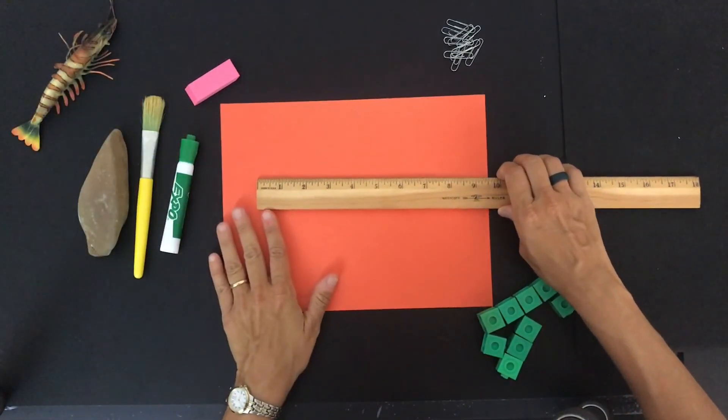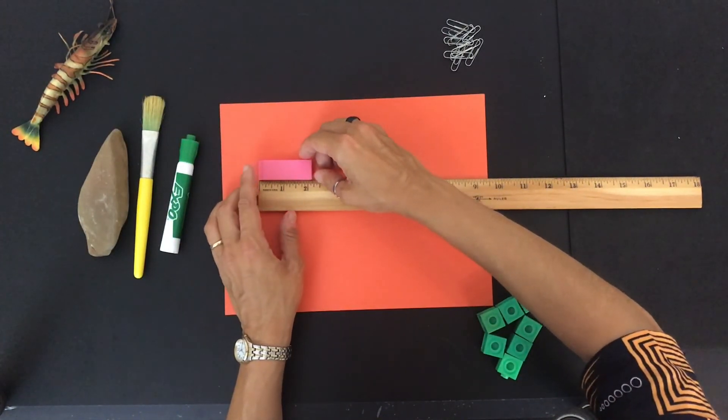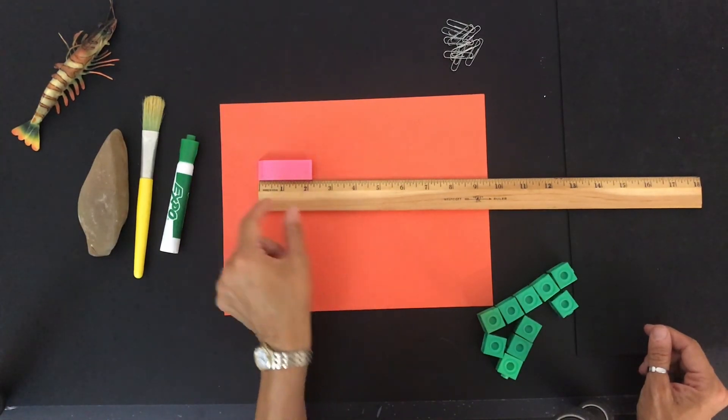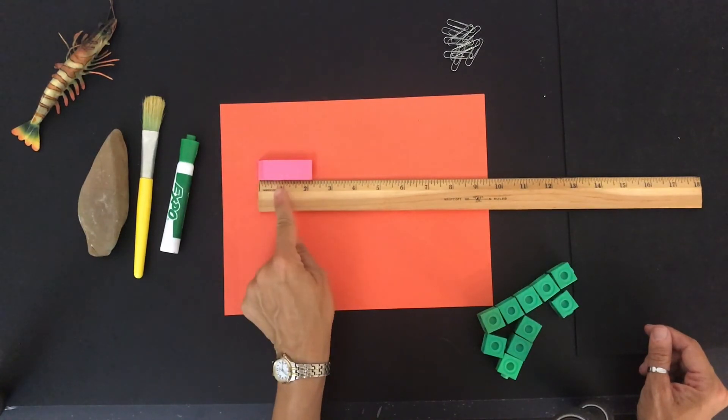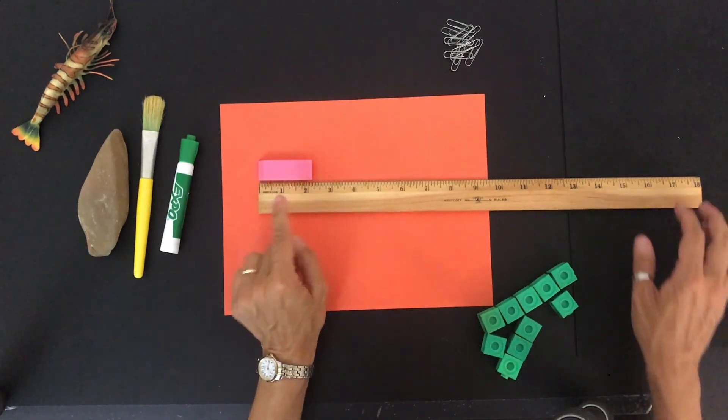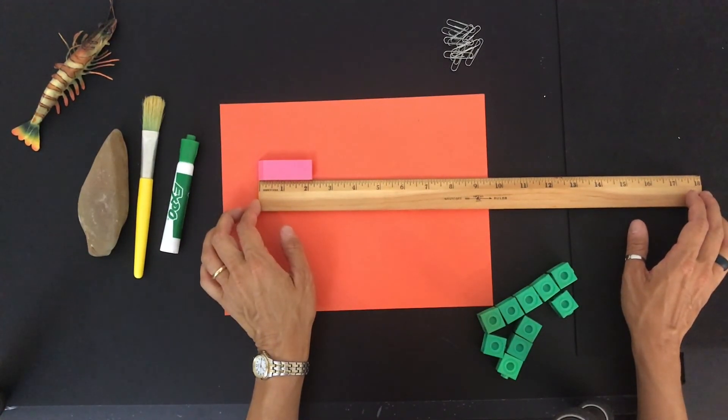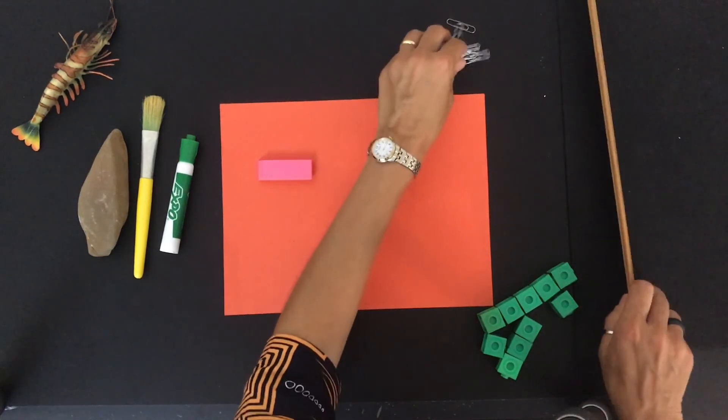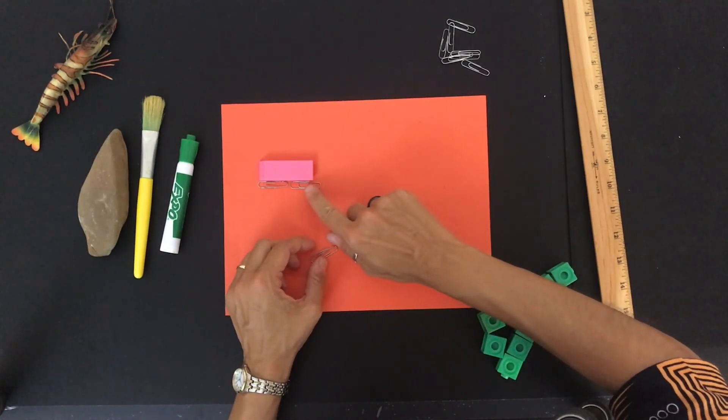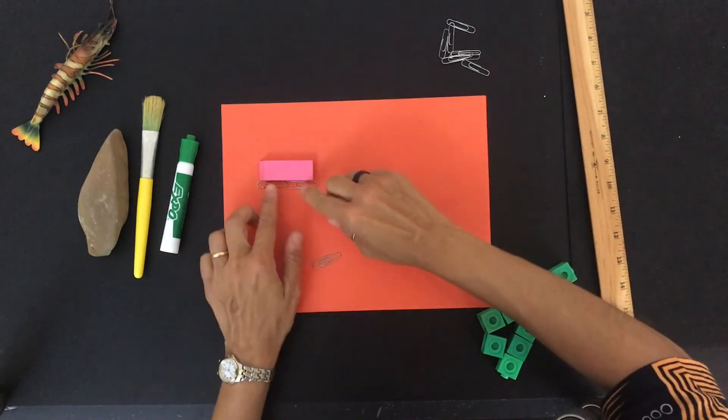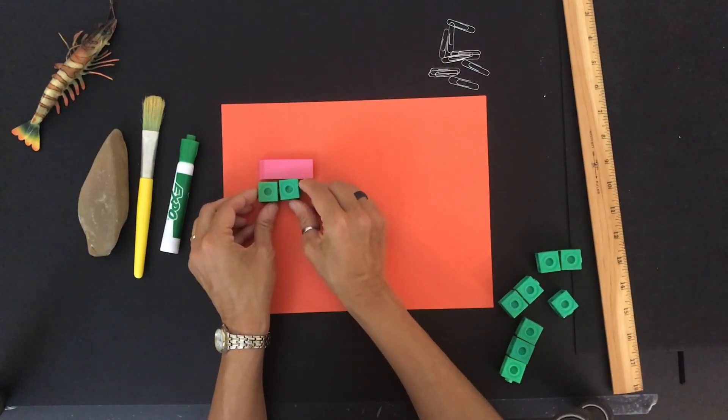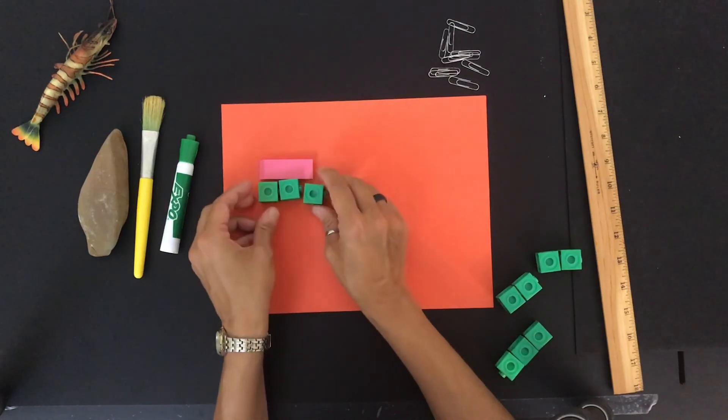Let's use the ruler to measure our eraser. It's just a little bit over two inches. So each segment here from one number to the next is called an inch. So if you're measuring with a ruler, you would say the eraser is two inches. If you were measuring with the paperclips like we did earlier, we would say that the eraser is two paperclips long. And if you're using the unifix blocks, you would say the eraser is three unifix cubes long.